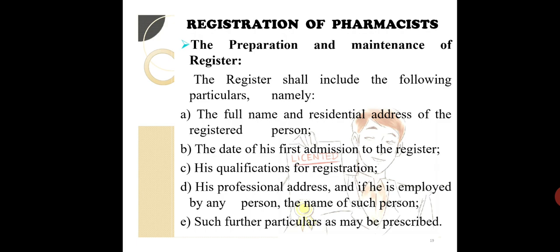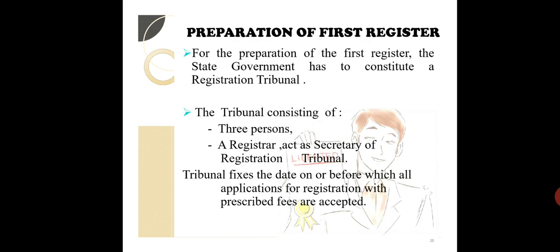Now, the most important topic — registration of pharmacists — is the main motive for all of you doing your pharmacy course. The procedure for preparation and maintenance of the register: the register shall include the full name, the residential address of the registered person, the date of first admission to the register, qualification for registration, professional address, and if employed by any person, the name of such employer, along with such further particulars as may be prescribed.